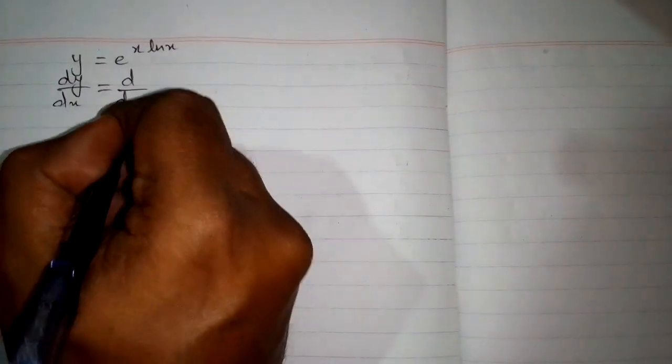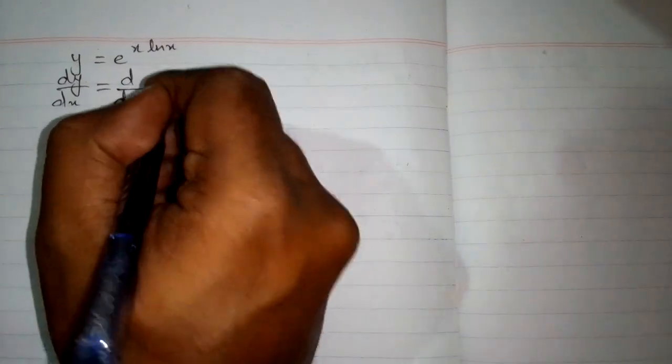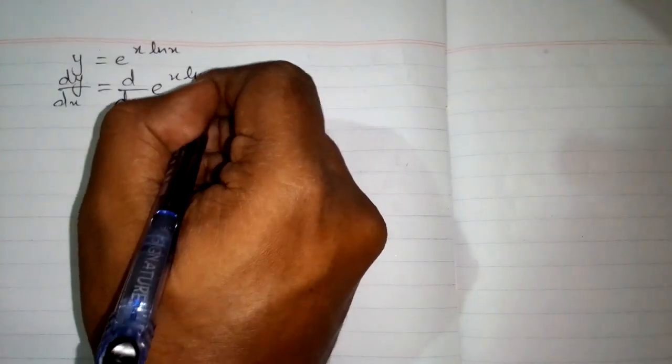Now, first we will differentiate both sides with respect to x. So we have dy by dx is equal to d by dx of e to the power x times ln x.